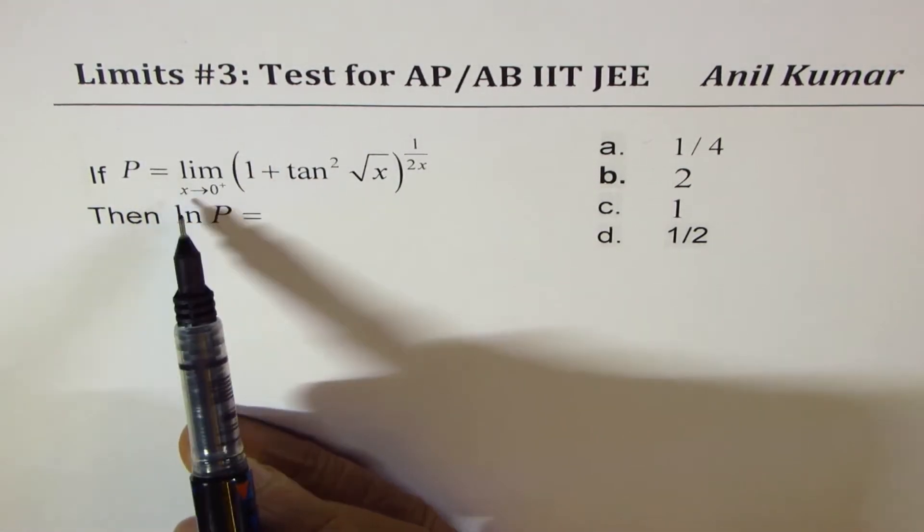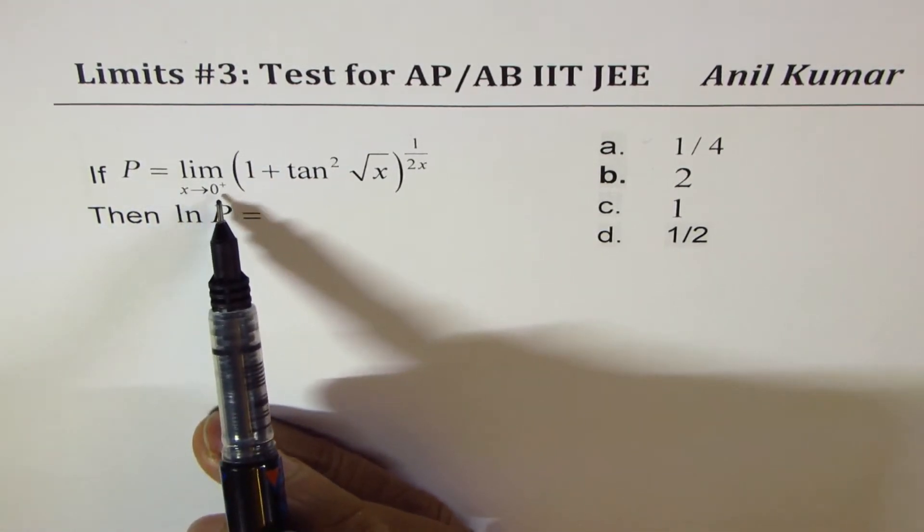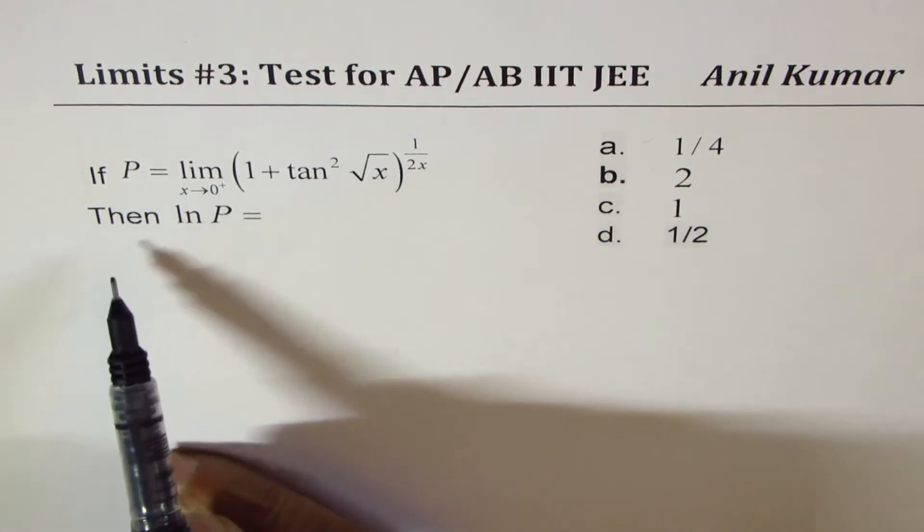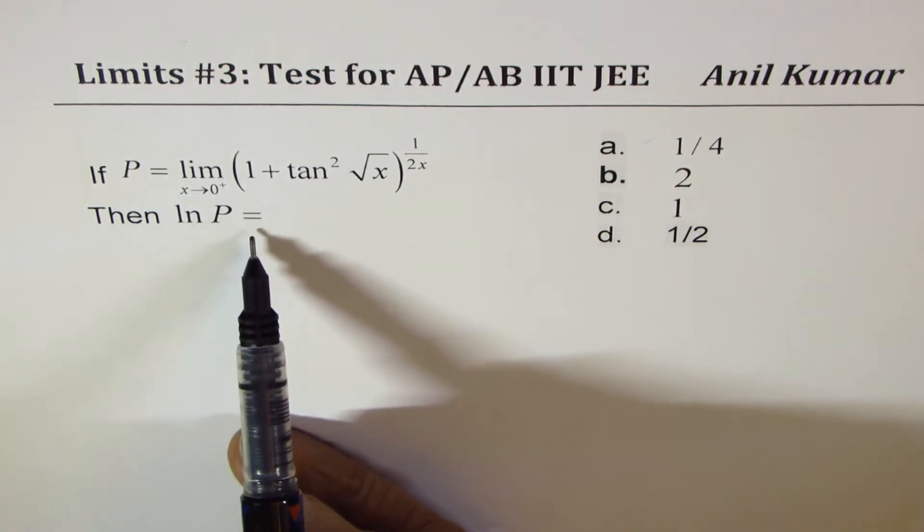if P is equal to limit x approaches 0 plus of (1 + tan²√x)^(1/2x), then ln P is equal to what?